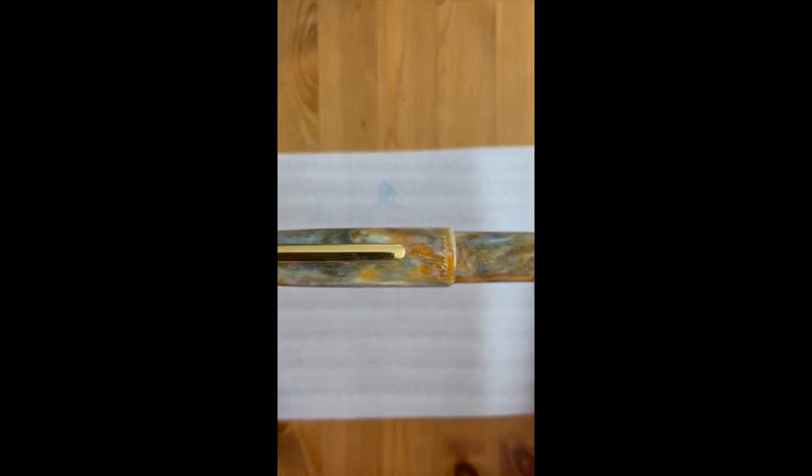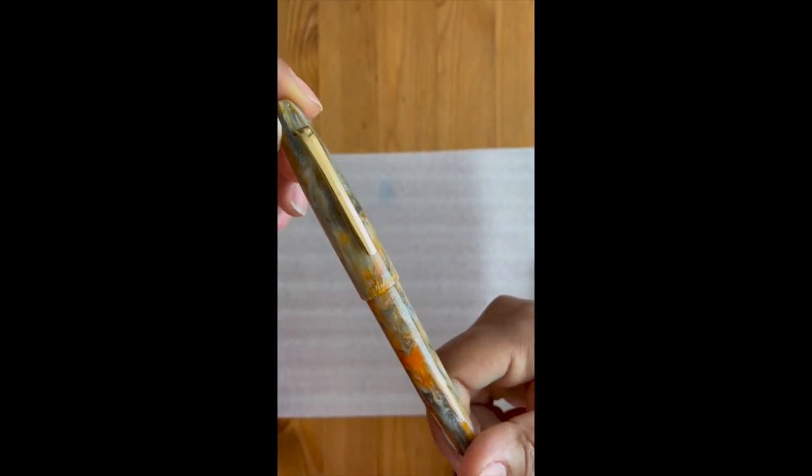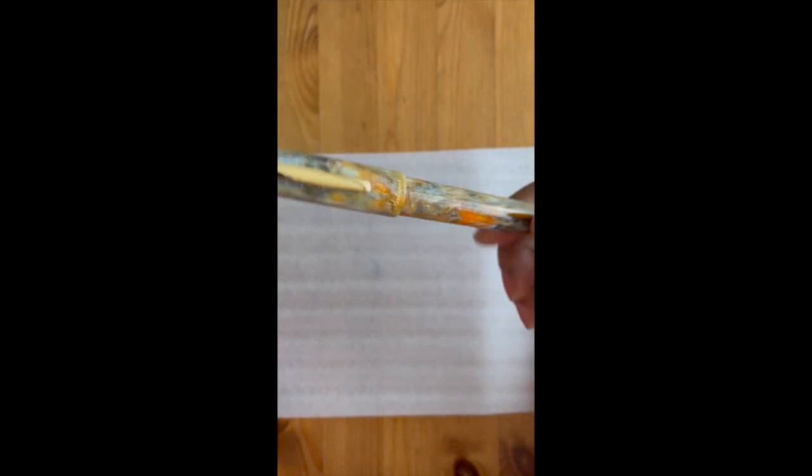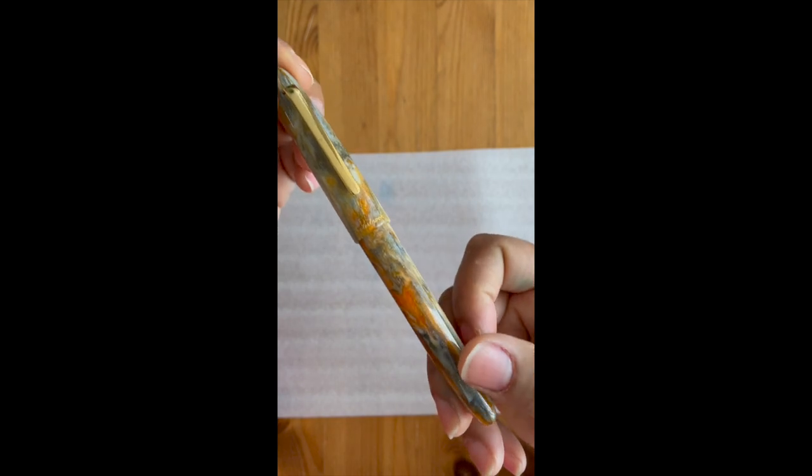Okay, pen number one I will say that made the list is my Esterbrook Estee. This is the Rocky Top special edition with the Journaler's nib. I don't remember where I acquired this from, I think it was from Vanness Pens.